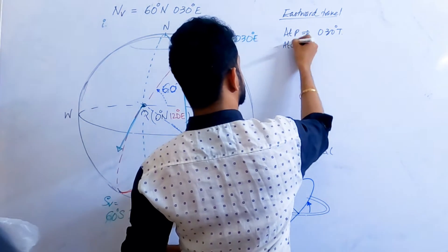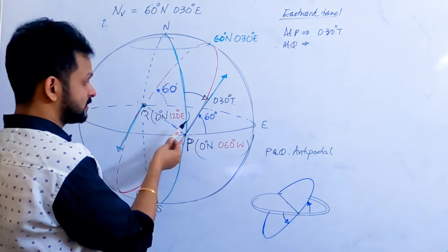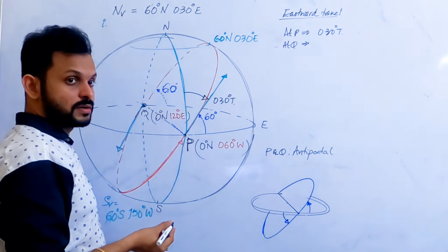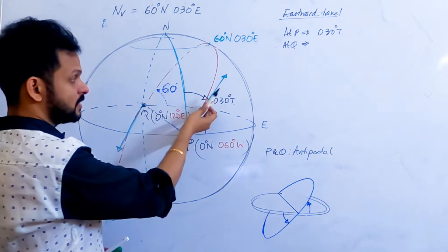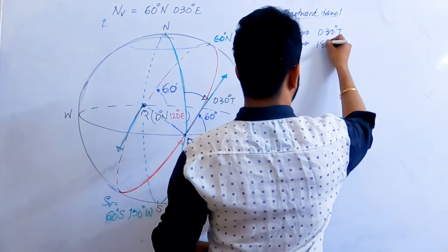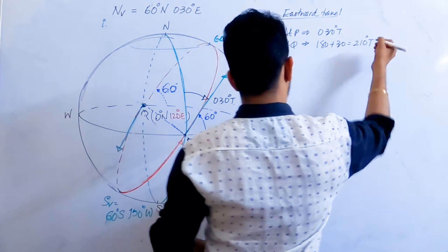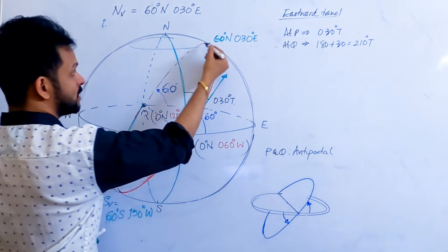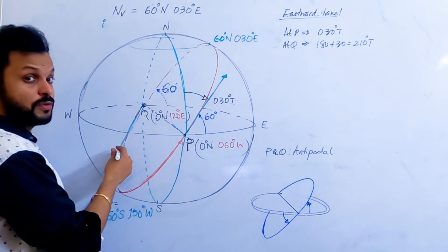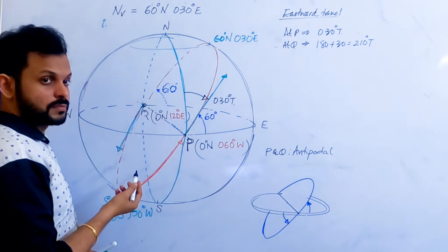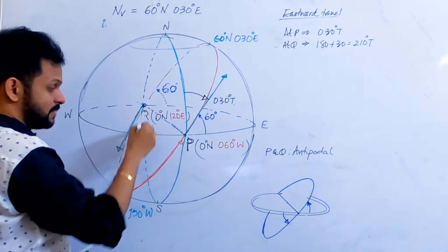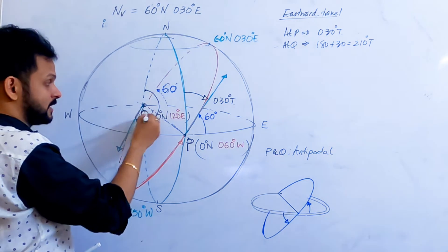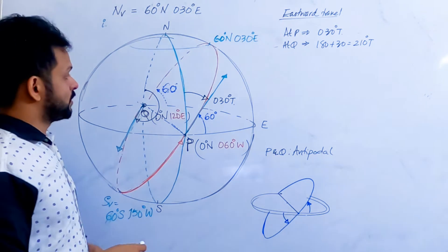What about at Q? If it is 30 degrees at P, the opposite direction is going to be 180 degrees plus 30. Let's see by calculating the angle the same thing. So traveling all the way eastward, you reach here — this is your direction of travel. From the Q point, draw the local meridian. From there, clockwise, measure the angle. So what is this angle?